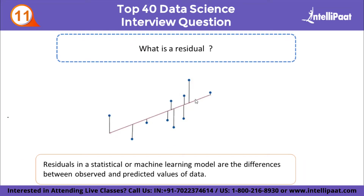What is a residual? Residuals in a statistical or machine learning model are the differences between observed and predicted values. In a best fit line, the predicted values lie on the line whereas the actual values are the data points. The difference between the predicted values and the actual values is known as residuals.